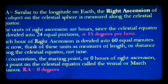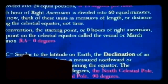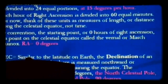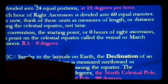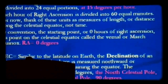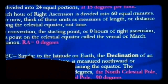Declination is the other coordinate you need to locate an object in the sky. It is similar to latitude on the Earth. The declination of an object on the celestial sphere is measured northward or southward from the plane containing the equator. The declination of the equator is zero degrees. So we've got our right ascension — which corresponds to the 24-hour clock — and declination, which tells us which of those concentric circles we're on.